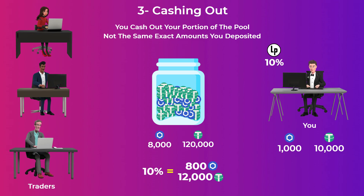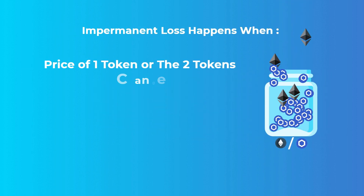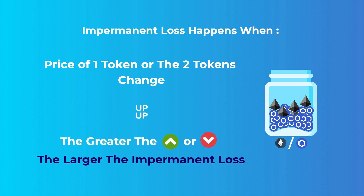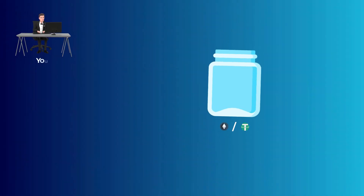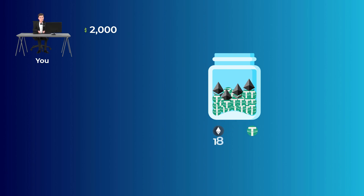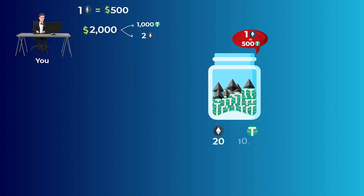Now that you know these important points, let's get into how impermanent loss happens and how to calculate it. Impermanent loss happens only when the price of one or both tokens in the pool changes — the greater the change, the larger the impermanent loss. Let's say you want to invest $2,000 in an Ethereum/Tether pool. Currently the pool has 18 Ethereum and 9,000 Tether. The price of Ethereum is $500, so you put in 1,000 Tether and 2 Ethereum, making the pool total 20 Ethereum and 10,000 Tether — you now own 10% of the pool.